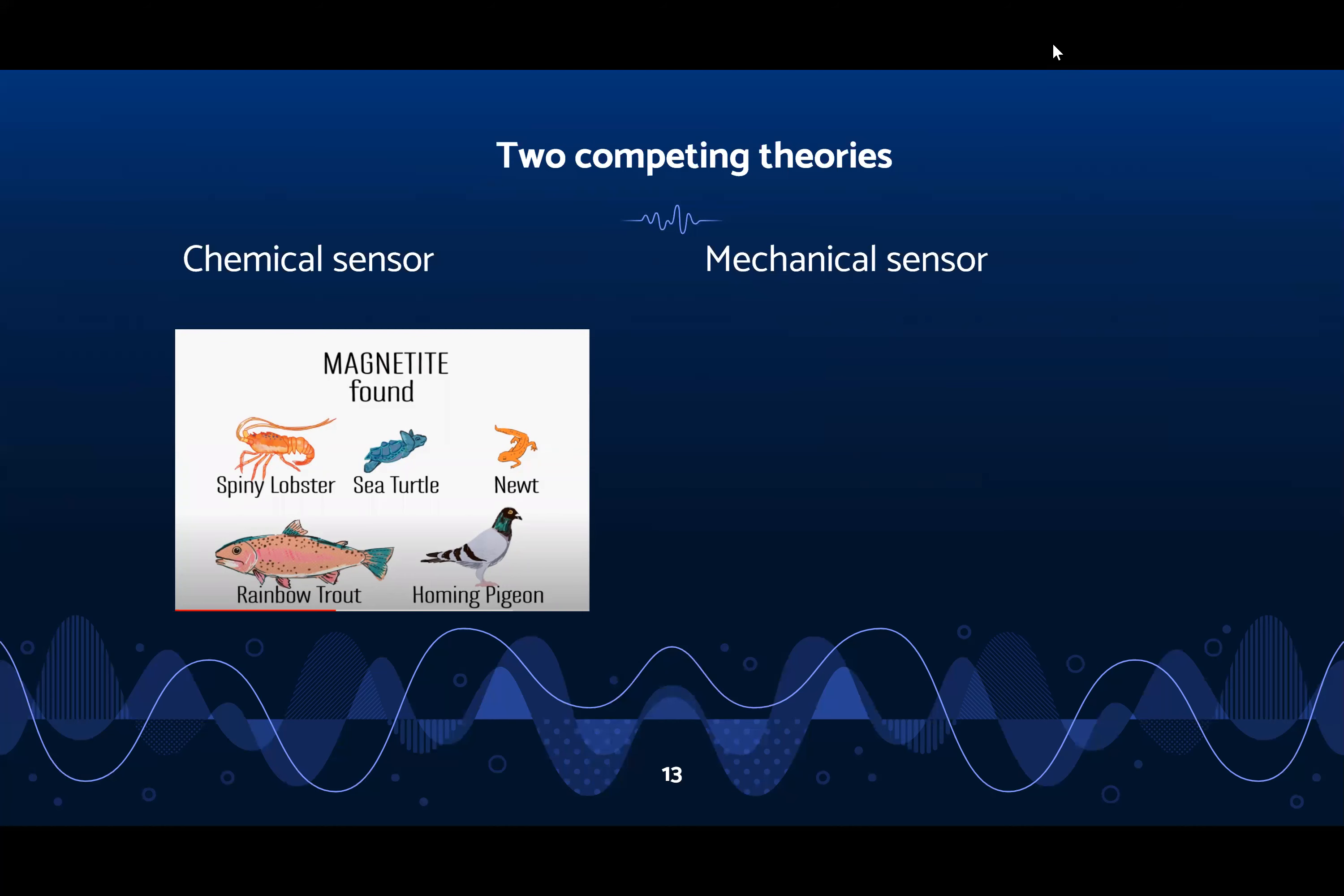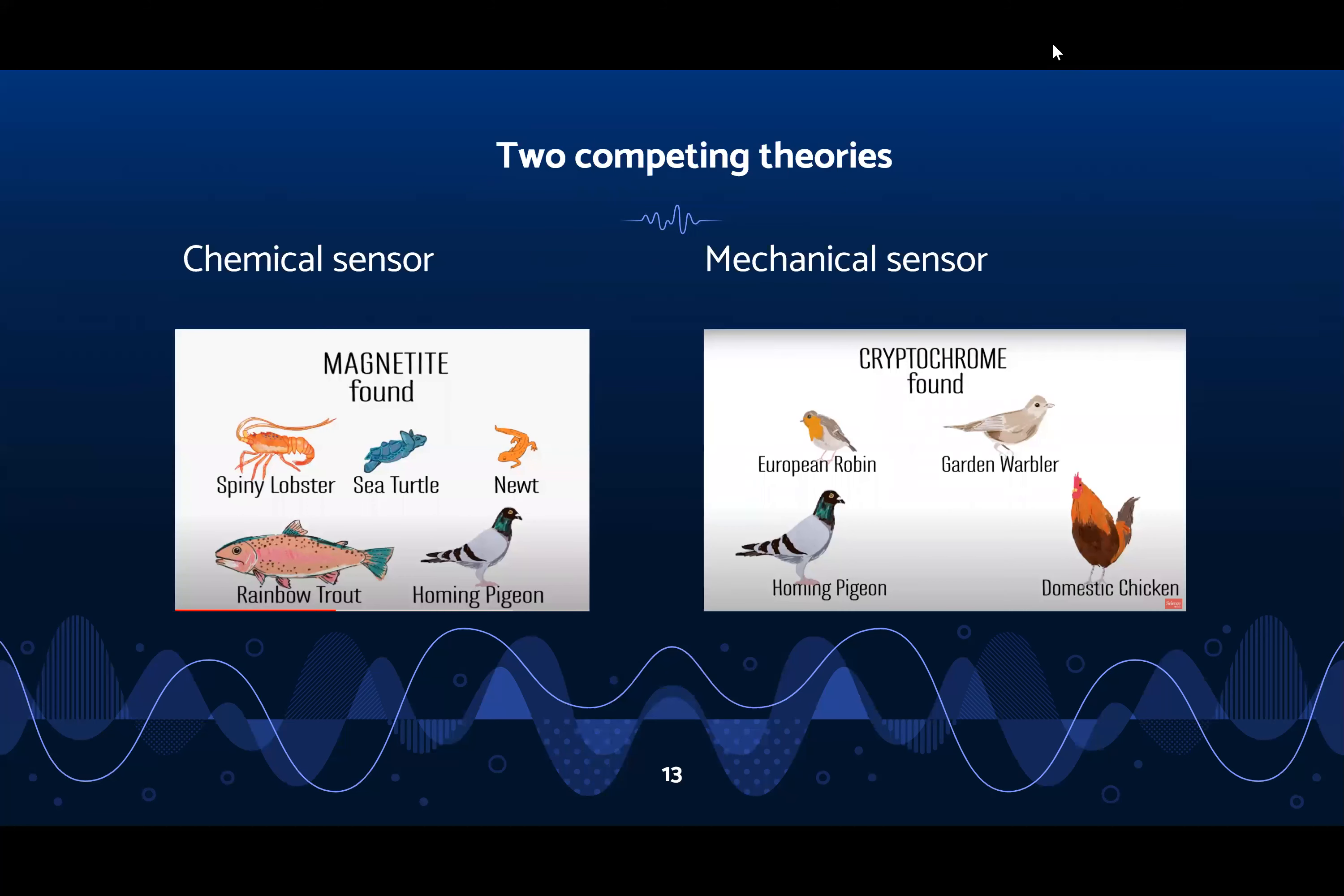The second theory is the mechanical sensor theory, which claims that there are proteins in the eyes of animals called cryptochromes to see magnetic fields. These have been found in the eyes of several birds including homing pigeons and domestic chickens. However, neither theory is completely proven, but researchers are looking at both theories to find evidence for magnetoreception in humans. Thanks for listening.